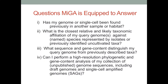MIGA allows users to answer questions such as: Has my genome or single-cell been found previously in another sample or habitat? What is the closest relative and likely taxonomic affiliation of my query genome against species represented by isolates or previously identified uncultivated taxa? What sequence and gene content distinguish my query genome from previously described taxa? And can I perform a high-resolution phylogenetic and gene content analysis of my collection of genome sequences, including draft genomes and SAGs?